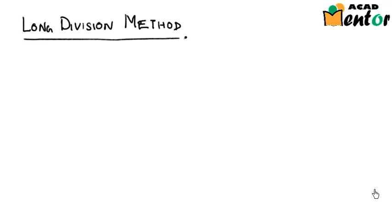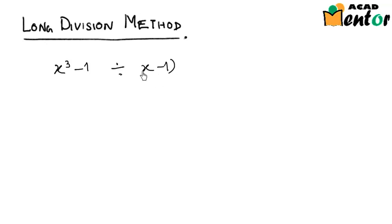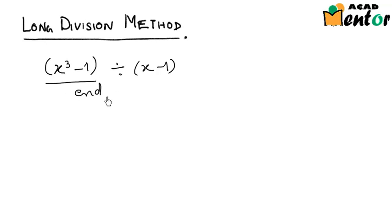We were looking at the long division method and I have a few examples here for you. So let's try and divide x cubed minus 1 by x minus 1. These are the two polynomials given to us. The first one is always the dividend while the second one is always the divisor.